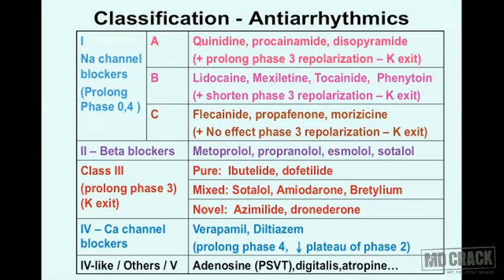Now let's look at the classification slide in detail. Class 1 drugs are sodium channel blockers. Sodium enters during phase 0, producing the upstroke, and also enters during phase 4. So class 1 drugs are going to prolong phases 0 and 4 — this is the common action for all class 1 agents.